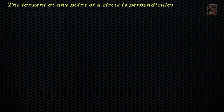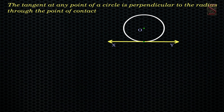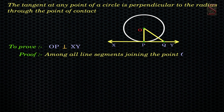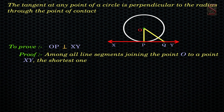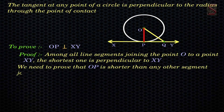Thus we prove the following theorem: the tangent at any point of a circle is perpendicular to the radius through the point of contact. Given: a circle with center O and a tangent XY to the circle at a point P. We need to prove OP is perpendicular to XY. Proof: let us take a point Q on XY other than P and join OQ. We know that among all line segments joining point O to a point on XY, the shortest one is perpendicular to XY. So to prove that OP is perpendicular to XY, it is sufficient to prove that OP is shorter than any other segment joining O to any point of XY.